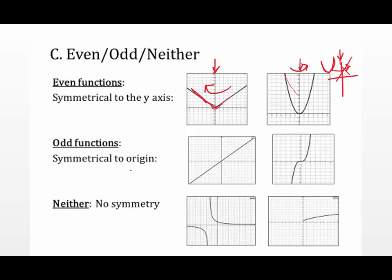An odd function is symmetrical to the origin, which requires two mental folds: fold across the y-axis, and then fold across the x-axis. If the lines match up, it is symmetrical to the origin. For instance, this linear equation and this cubic function — if you fold across the y and then across the x — the lines lie right on top of one another, making them symmetrical and therefore odd functions. If the lines don't line up after those two folds, it's no longer symmetrical.